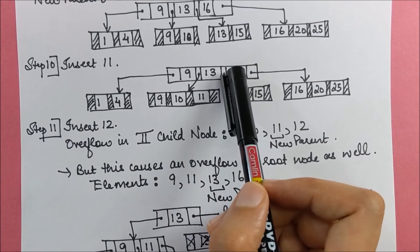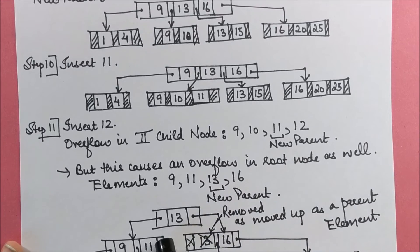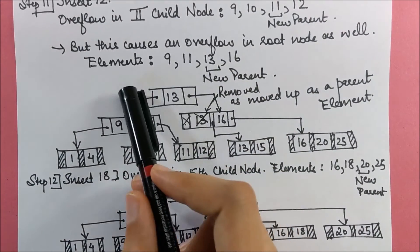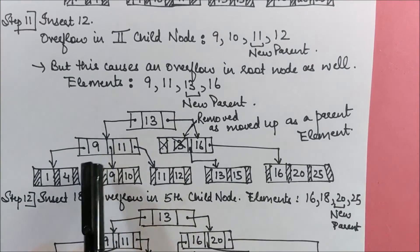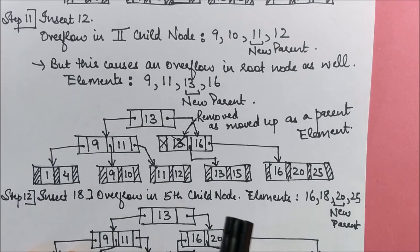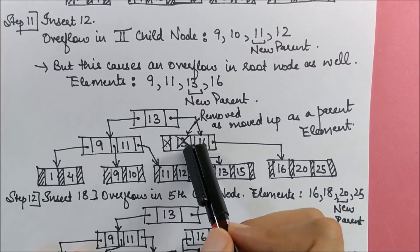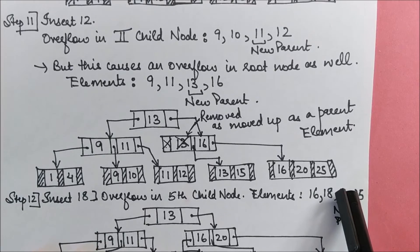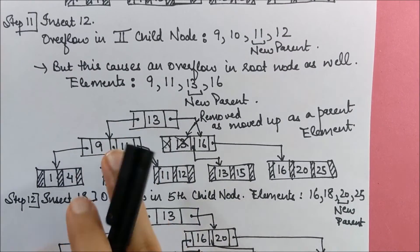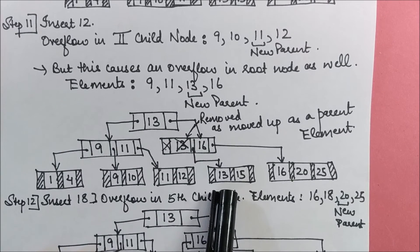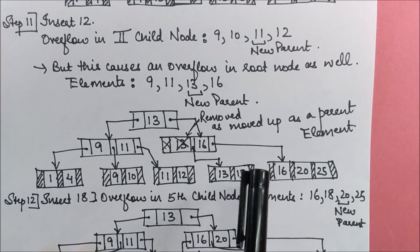Finally insert 12: overflow occurs in that node, so 11 becomes a new parent and is promoted. However, the internal node it's being promoted into is already full, so a split occurs at that level as well. The new root becomes 13, with the second level containing 9, 11 and 16. Note: 13 in the internal node is crossed out from the leaf level — it is retained in the leaf node containing values less than 16 (since 13 < 16), but not duplicated in the internal level.